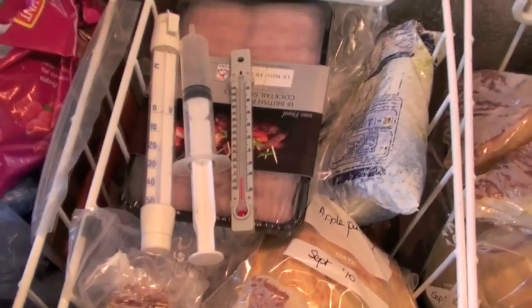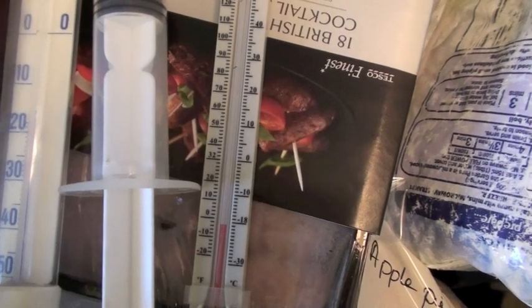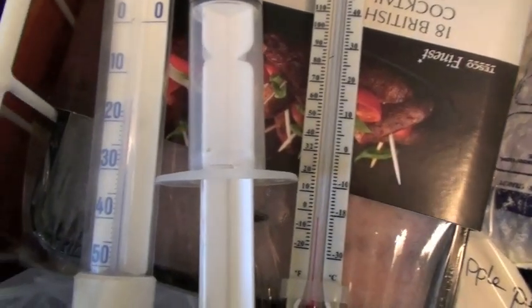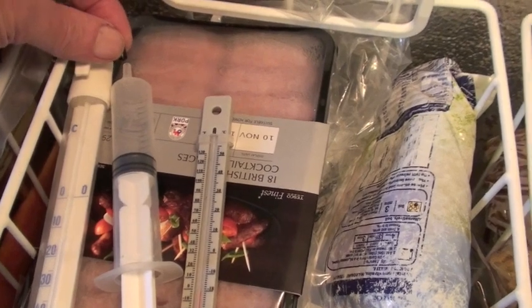Lying on top of this pack of sausages in the freezer are a syringe containing only air and a thermometer. If you want to try this yourself, by the way, the sausages are not essential. I'm going to use this small rubber cap to seal the syringe so that it contains a fixed amount of air.